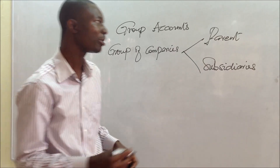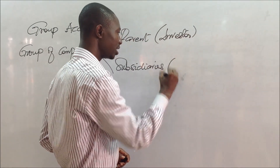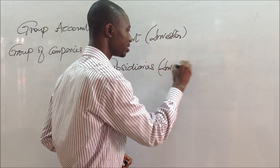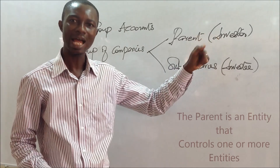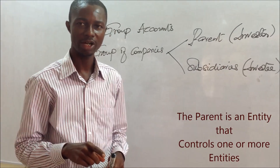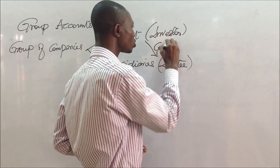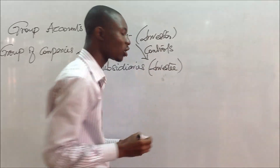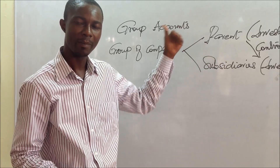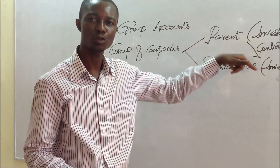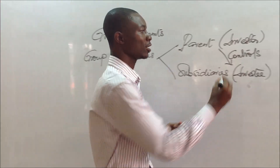The parent could also be referred to as an investor, and obviously the subsidiaries would be the investees. The parent is an entity that controls one or more subsidiaries. So the key thing is that the parent controls one or more subsidiaries. In order that there will be a group, there must be a parent which has control over one or more subsidiaries. The key element in there is control.